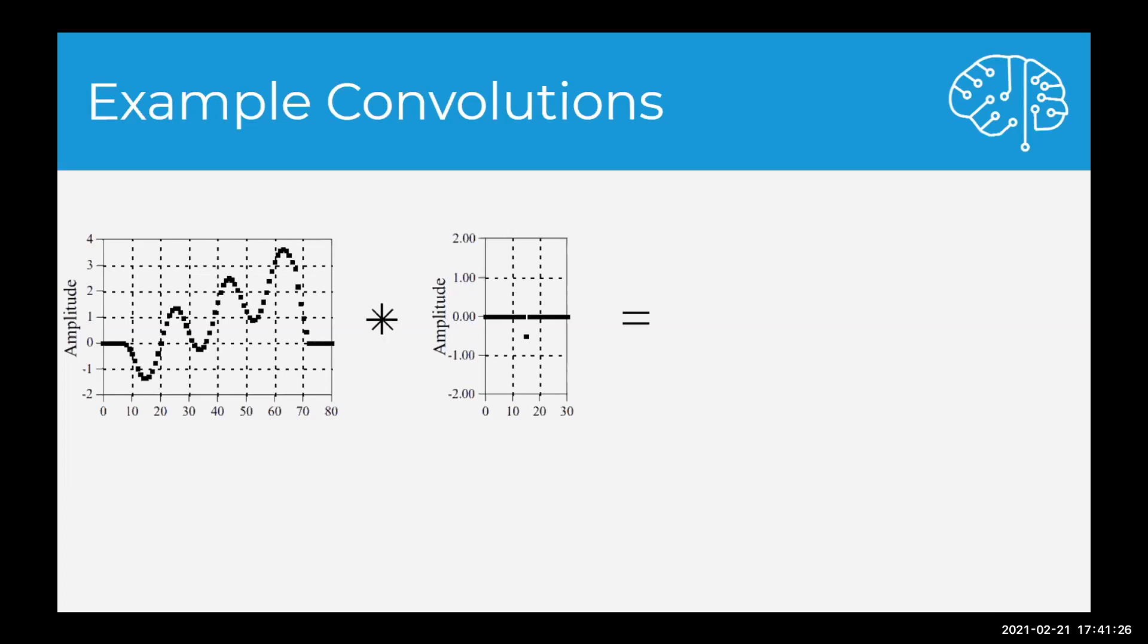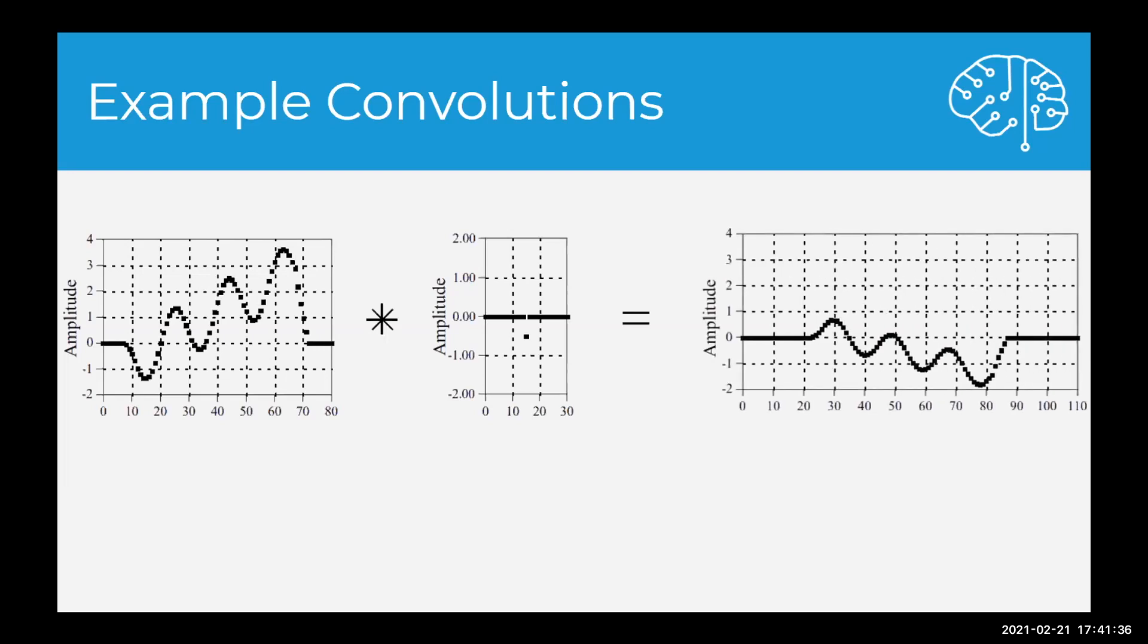As you notice, the delta is time shifted by 15, so the output will also be shifted by 15. And here's the output. It is flipped, halved, and shifted by 15, just as we predicted.